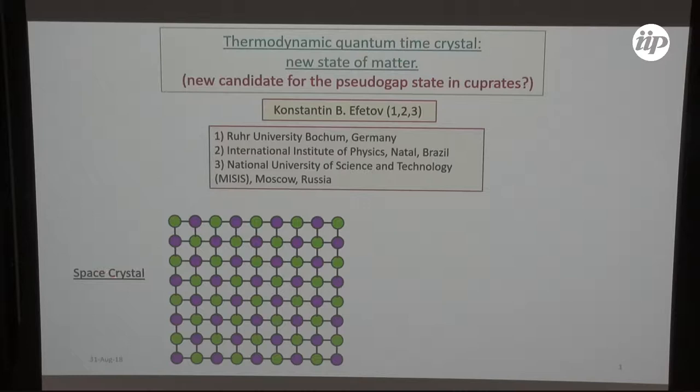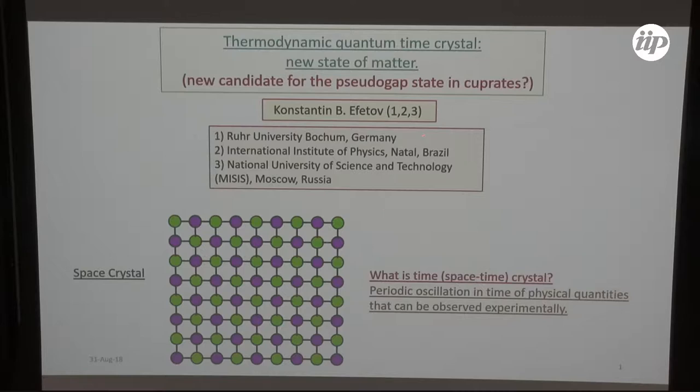So what is time crystal actually? The space crystal everybody understands - it's determined by long range order. You take a position of an atom or electron and it's just a periodic function. This time or space-time crystal can be described as a periodic oscillation in time of physical quantities that can be observed experimentally.